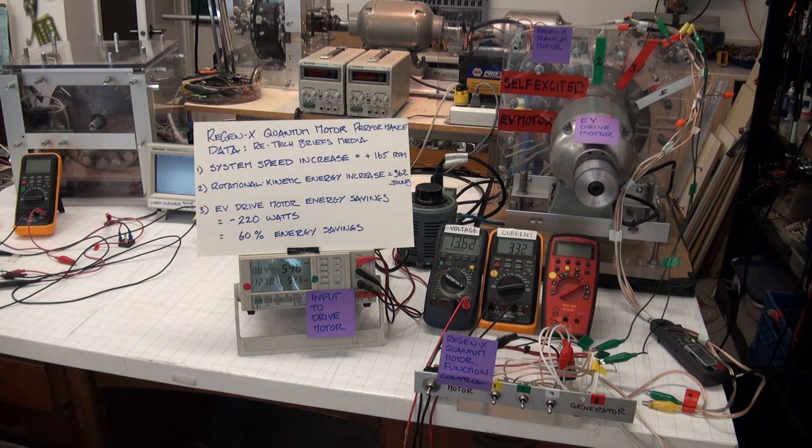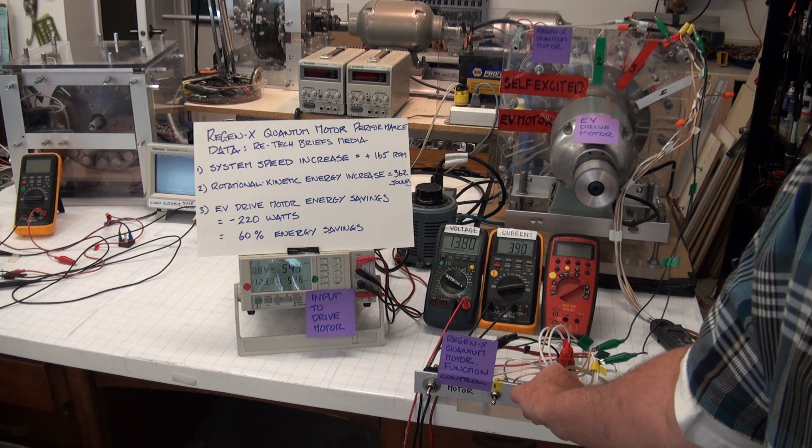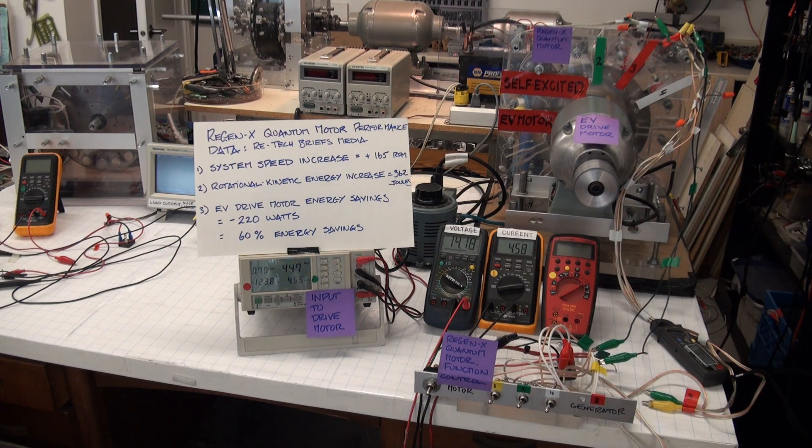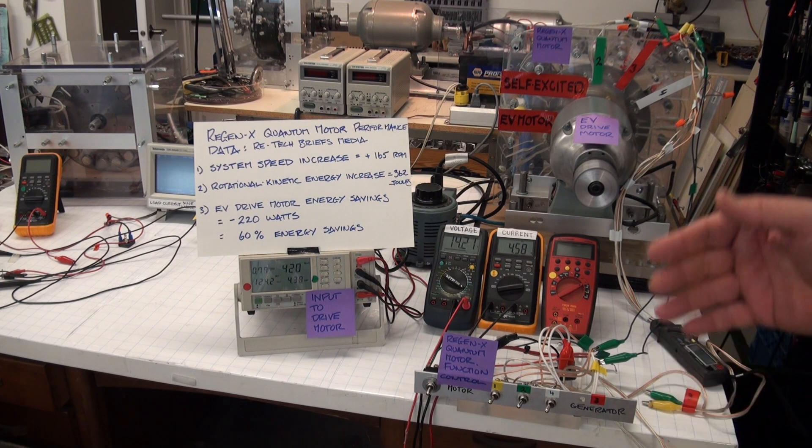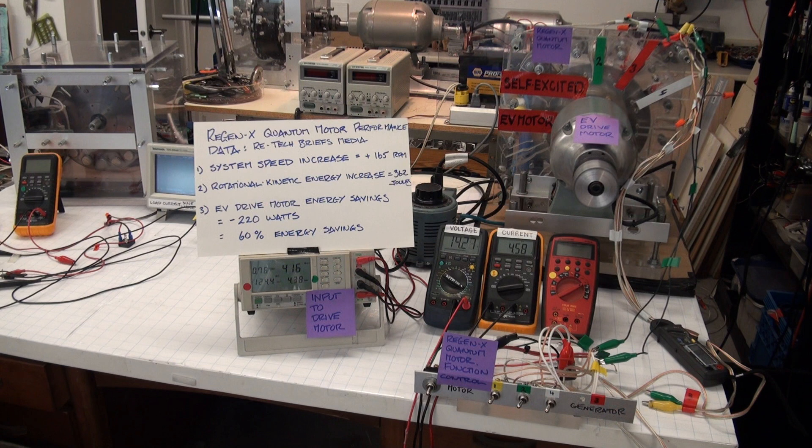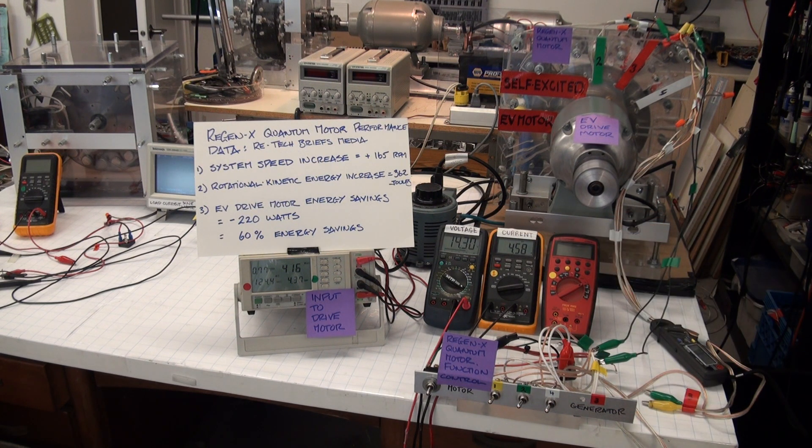3.3 amps to the battery. We can override the regenerative braking of the conventional coil with the motor coils. Now we're delivering almost 5 amps to the battery from a single Regenexx coil.